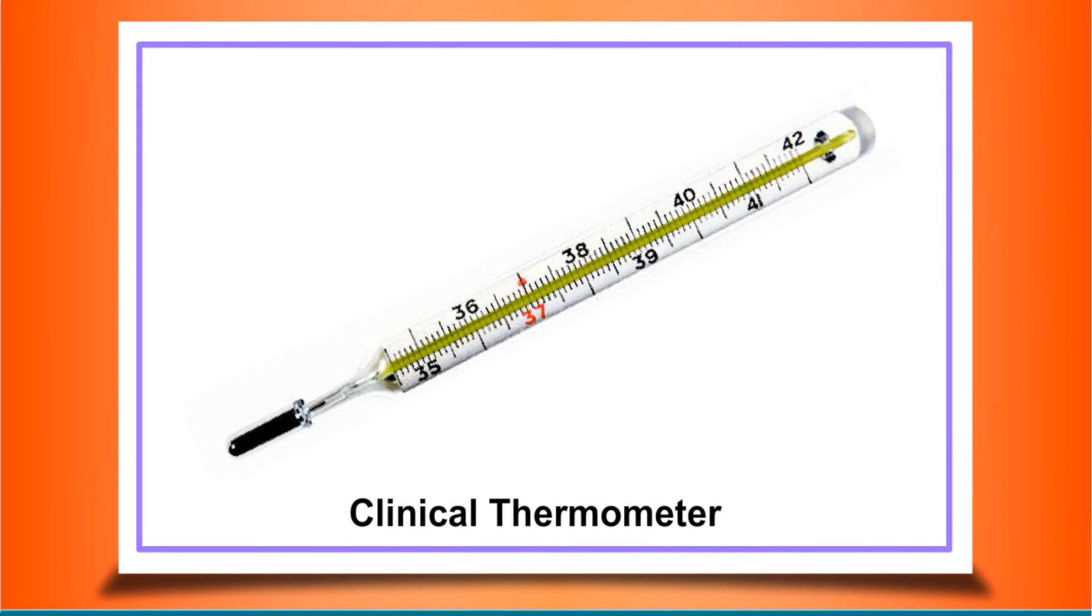You can calculate the least count of a thermometer in simple steps. Hold the thermometer and count the number of divisions between any two numbers on it. Divide the difference between the numbers by the number of divisions. For example, if there are 20 divisions between 10 degrees Celsius to 20 degrees Celsius, the least count will be 10 upon 20 equal to 0.5 degree.